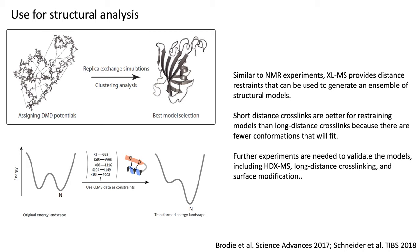Crosslinking has been suggested to be used for structural analysis. Similar to NMR experiments, crosslinking mass spec can be used to provide distance restraints that can be used for an ensemble of structural models to help with complexes that don't have structures already. In these cases, short distance crosslinks are often better for restraining models than long distance crosslinks, because you need that short distance to really restrain the complex. The long distances don't really help because there are so many options that could meet that restraint.